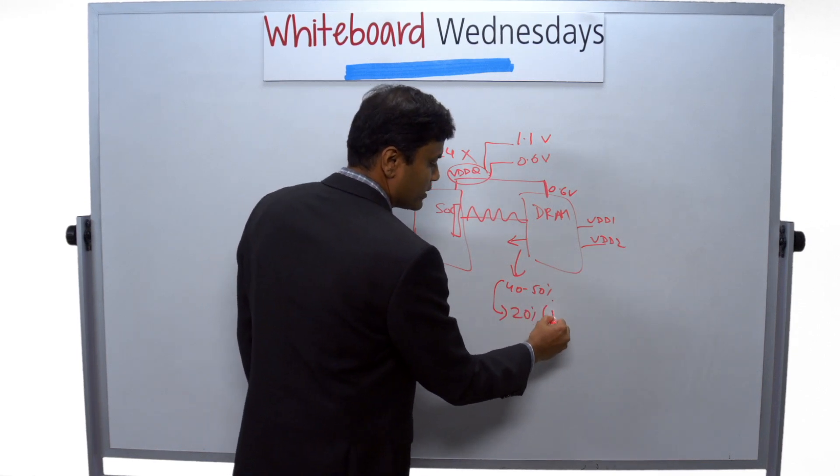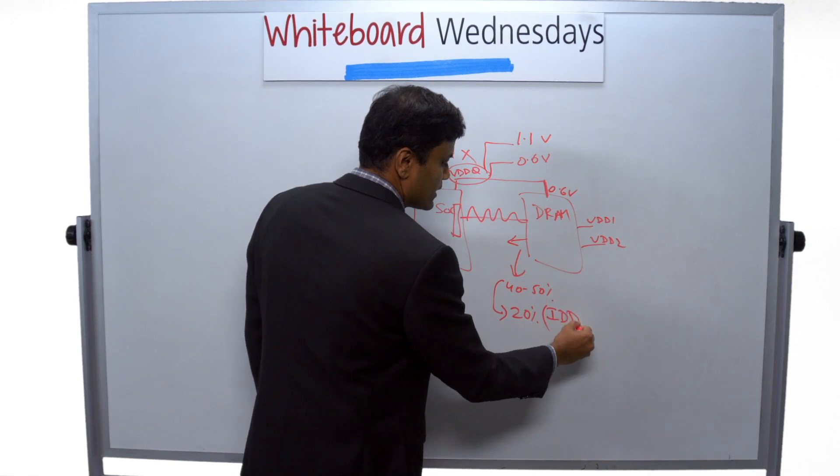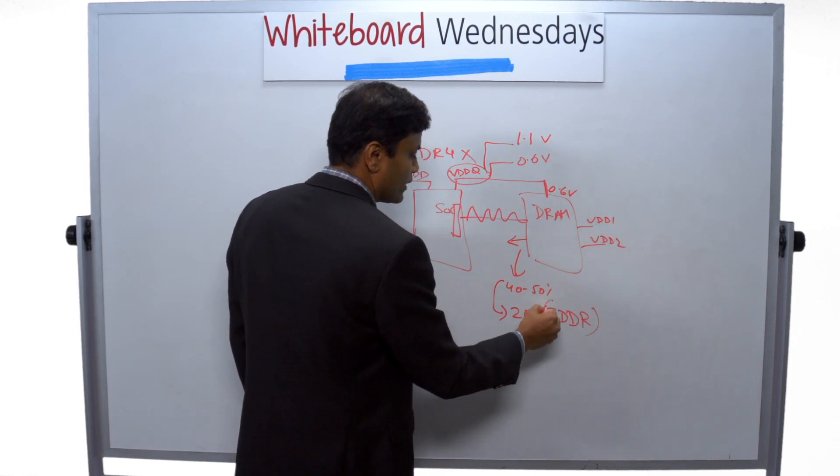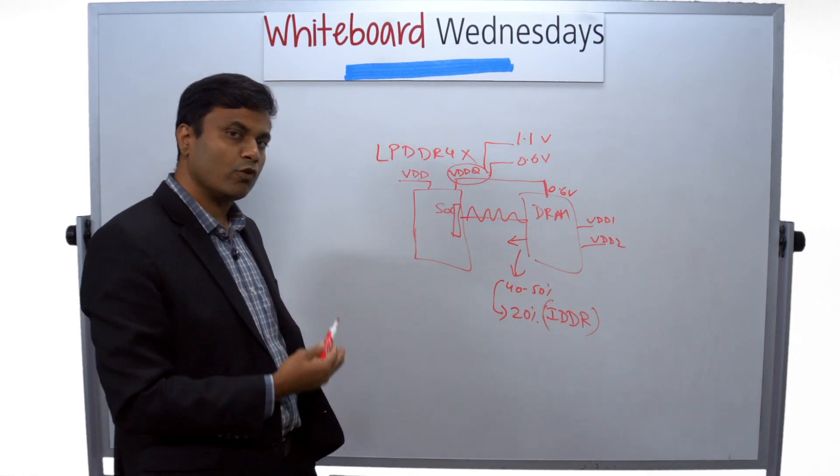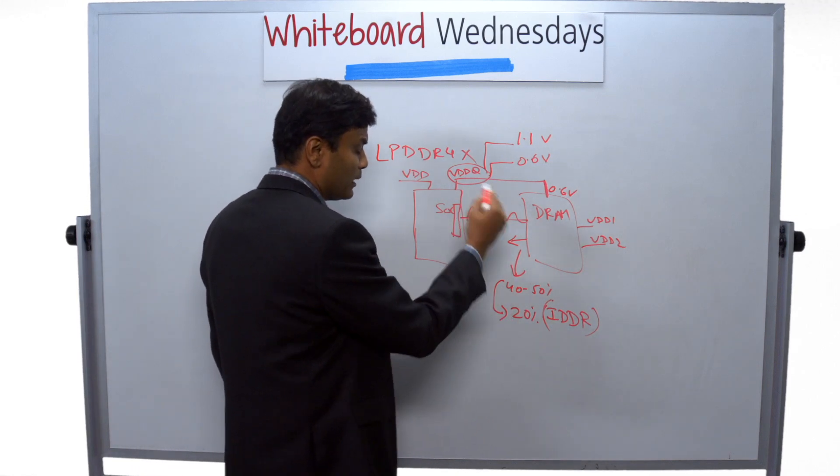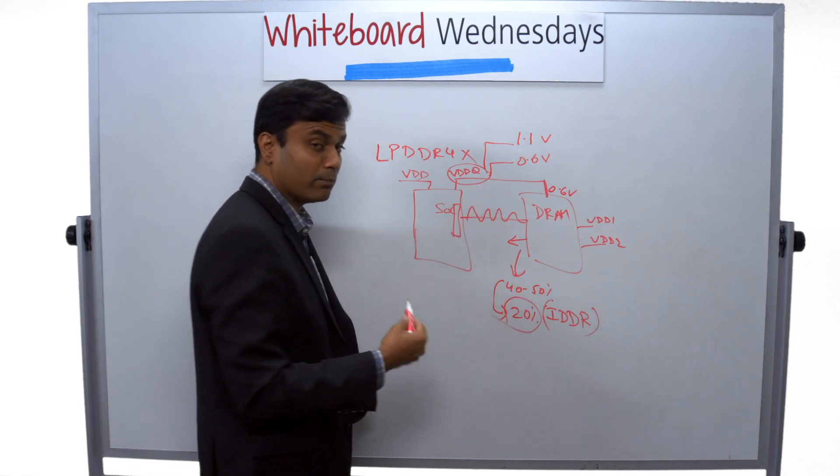This is typically represented as a parameter known as IDDR in the DRAM. So if you compare those specs between LP4 and LP4X, you will see a 20 percent improvement in the power.